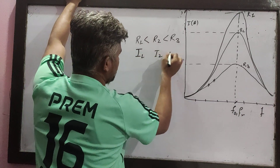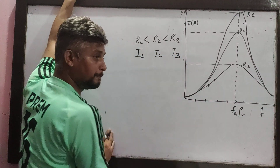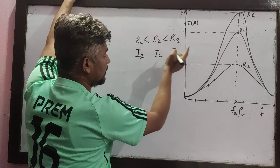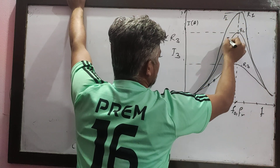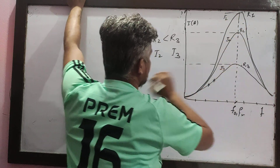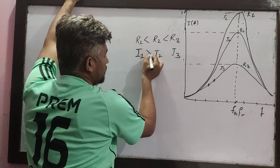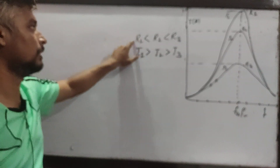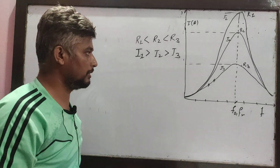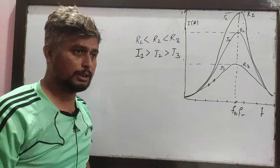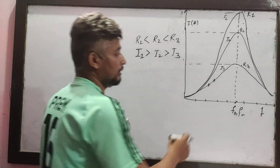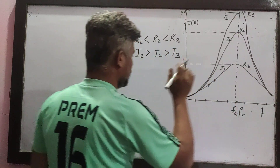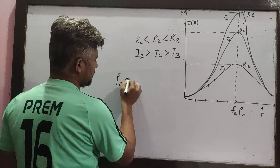Similarly, the currents are I1, I2, I3. Because of the inverse relation between current and resistance, I1, I2, I3 correspond to R1, R2, R3. The resonance frequency FR remains the same for all curves.